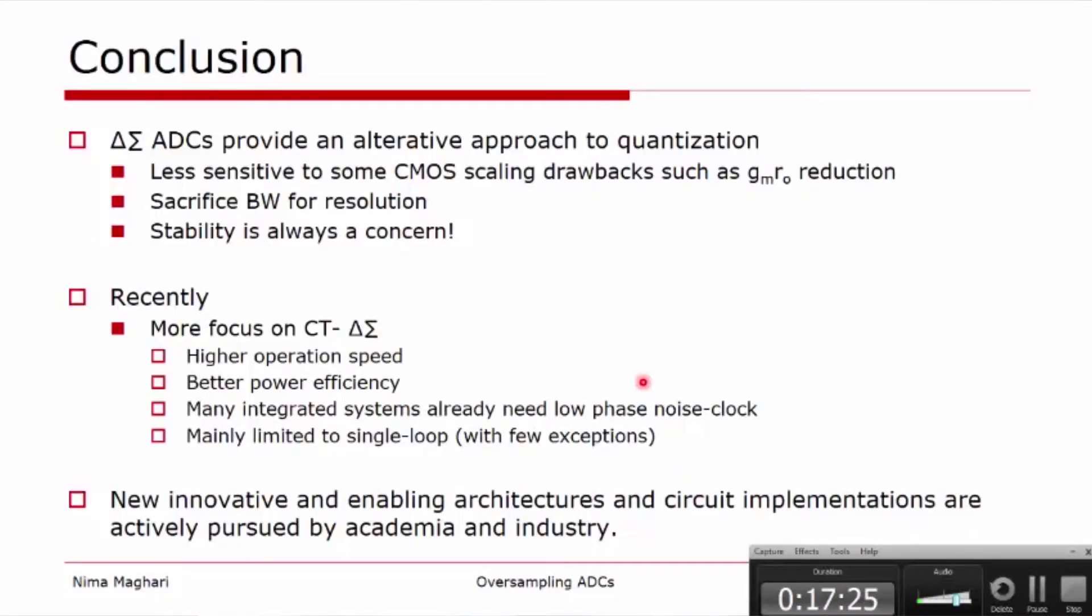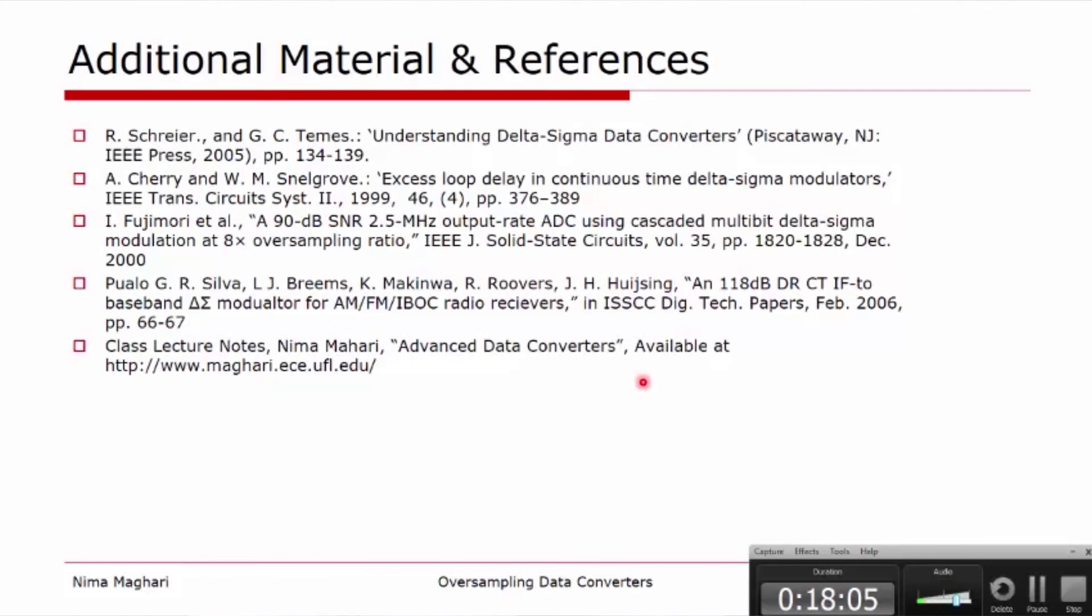In recent years, there have been much more focus on continuous-time Delta Sigma modulators because they can operate much faster than discrete time. They have better power efficiency. And many integrated systems on SOCs already have a low-phase clock that you can use it for your clocking of the loop. But they are mainly limited to single loop with few exceptions that are worked out there. Even to this day, there are a lot of new innovative and enabling architectures that are still worked on, both on the circuit level and on the architecture level for both academia and industry. Here are some additional material and references for your study. Thank you.